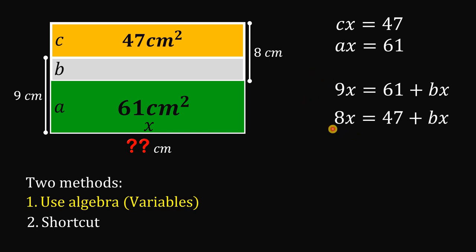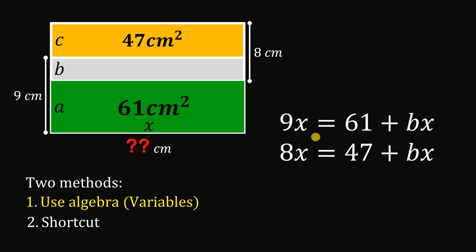And now, we can now focus on these two results. Take note that we want to find the value of x. So, let's subtract these two equations. Now, if we do that, we eliminate this bx and bx. bx minus bx, this is just equal to 0. Now, 9x minus 8x, this will give us x.